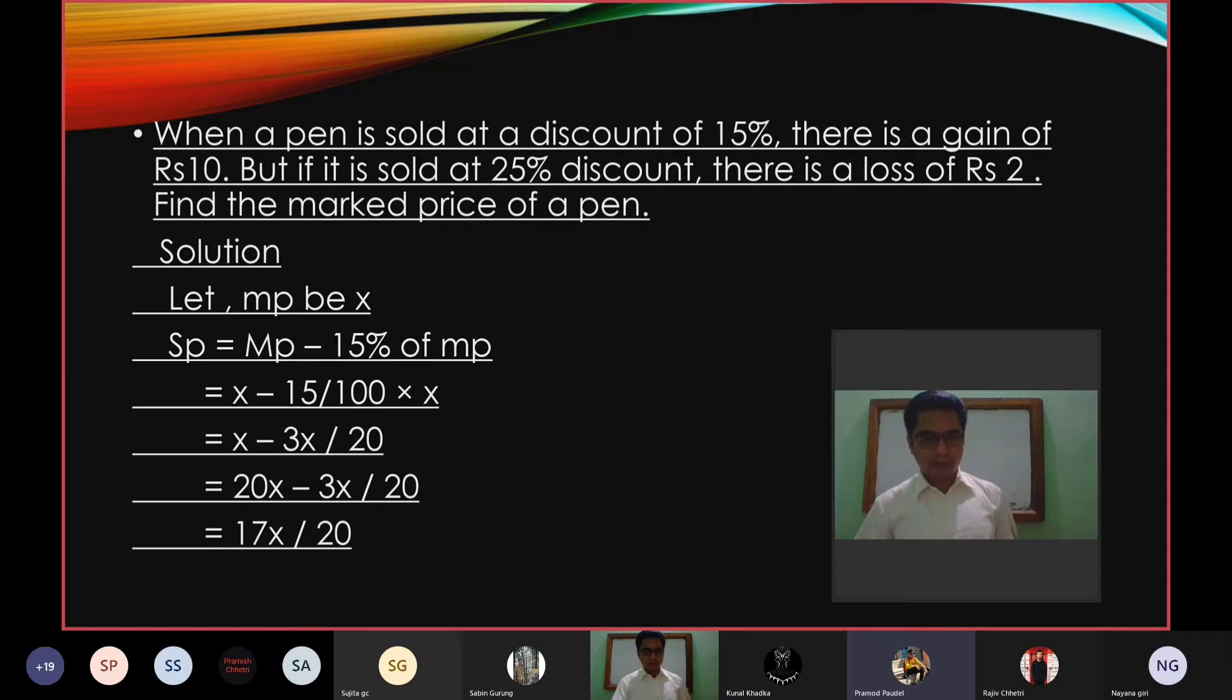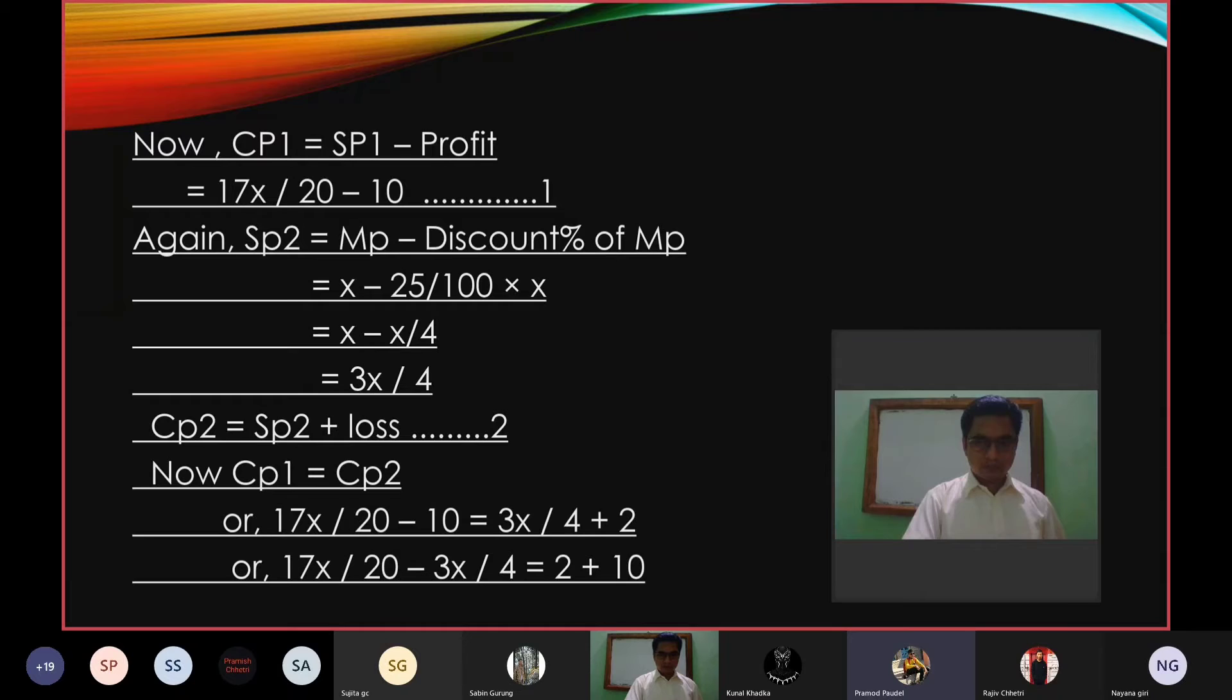Solution: Let MP be x. SP is equal to MP minus 15% of MP, equals x minus 15/100 x, equals x minus 3x/20, equals 20x minus 3x over 20, equals 17x/20. Now CP equals SP minus profit, equals 17x/20 minus 10. This is equation 1.